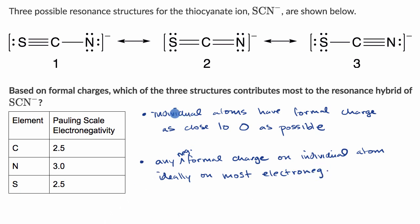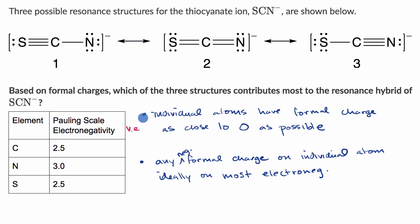With these two principles, let's figure out which of these resonance structures get closest to these ideals. To do that, let's calculate the formal charges in each of these resonance structures. For each element, we consider how many valence electrons a free neutral atom of it would have.